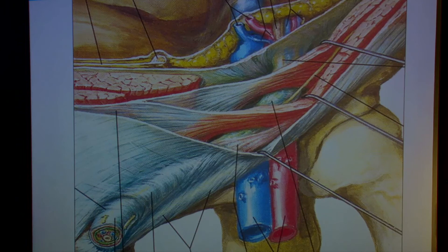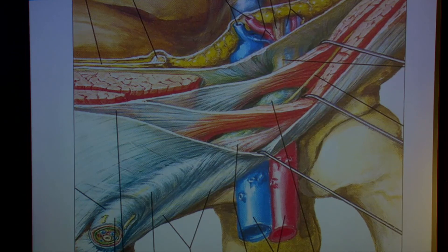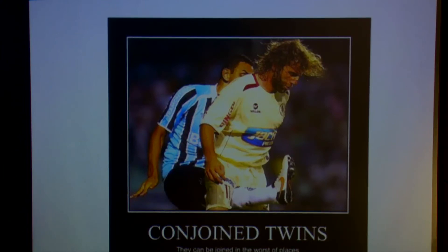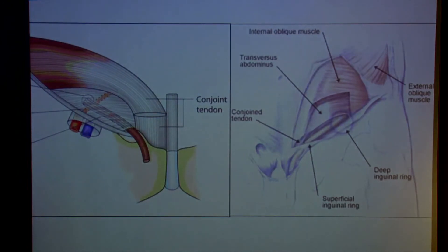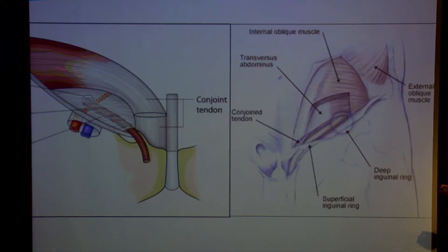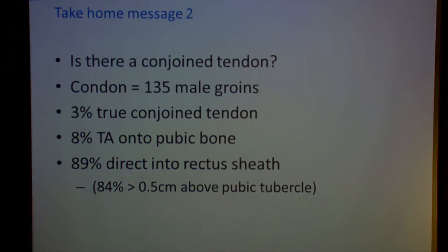As mentioned earlier, the transversus and the internal oblique meet each other, and where they meet lower down is referred to as the conjoint tendon. The conjoint tendon is where the transversus and internal oblique meet and then come down to insert onto the pubic crest. Here's the deepest layer — the transversus — then the internal oblique inserting down there. The second take home message of today is that the presence of a true conjoint tendon is questioned in the literature.